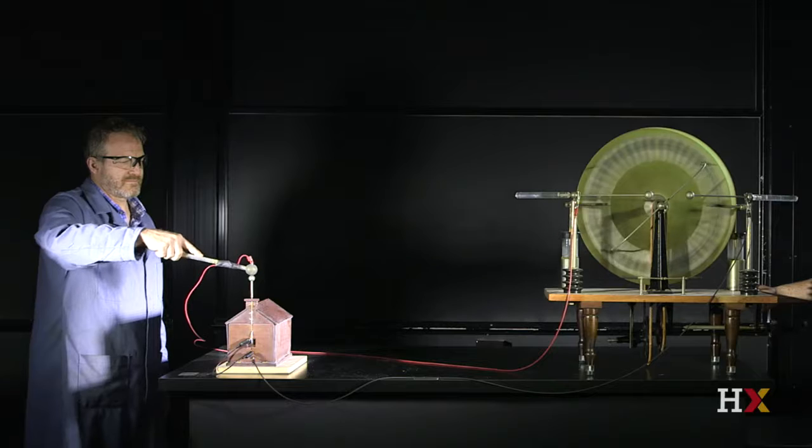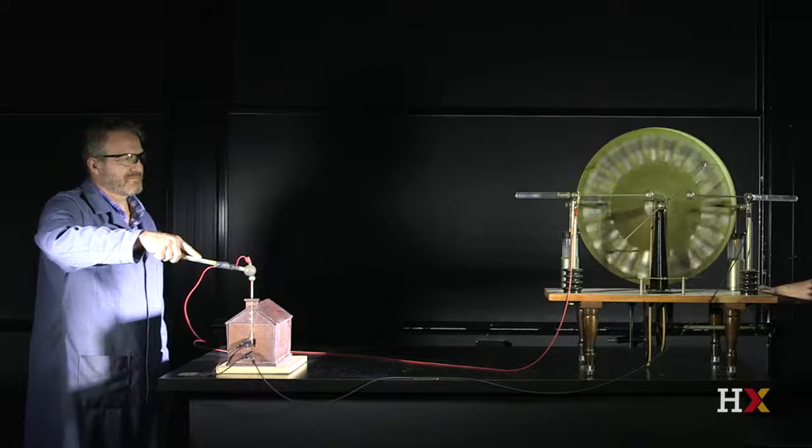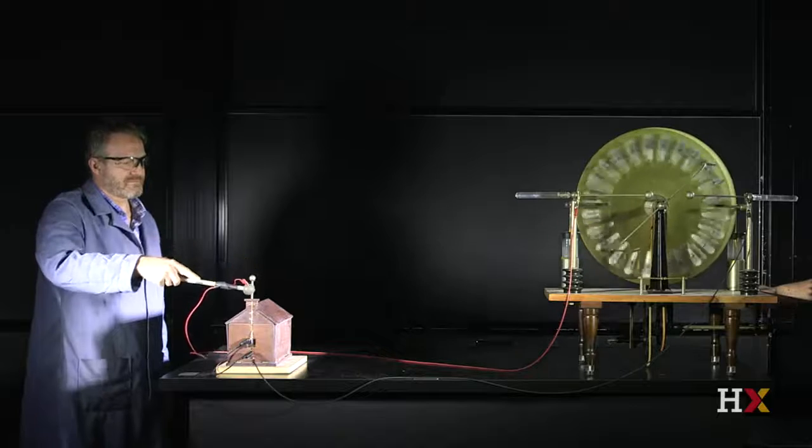This is how a lightning rod protects a building from a lightning strike. The lightning strikes the rod and is conducted through the wire to a grounding rod in the earth, rather than into the building.